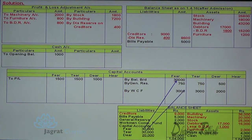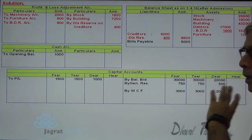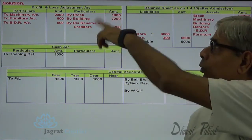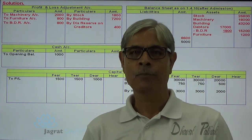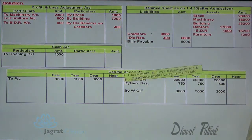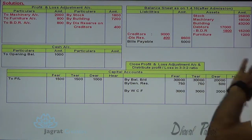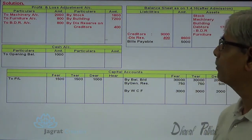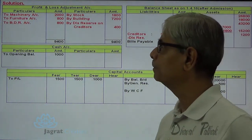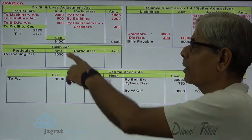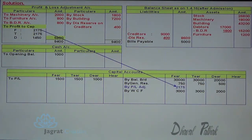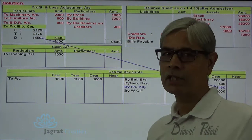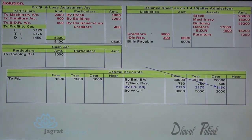Balance of capital accounts brought down: Fear ₹30,000, Tear ₹30,000, Year ₹20,000. Now close the profit and loss adjustment account. The profit or loss is to be distributed in the profit sharing ratio of 3:3:2 among the three partners. Total of credit side ₹9,400 minus debit side ₹3,600 gives a profit of ₹5,800, distributed in the ratio 3:3:2, credited to the capital accounts of Fear, Tear, and Year.